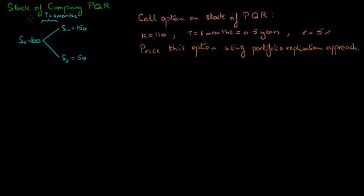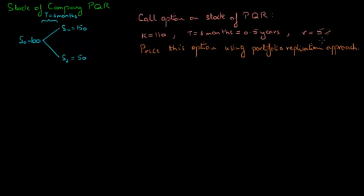We are given some information on the stock of company PQR as well as the option on the stock. The current stock price, denoted by S0, equals 100. In six months time, the stock price could go up to SU, which equals 150, or it could go down to SD, which equals 50. A call option on the stock of PQR has a strike of 110 and time to maturity of six months, or 0.5 years. The discount rate is 5%, and we will assume that this is continuously compounded.